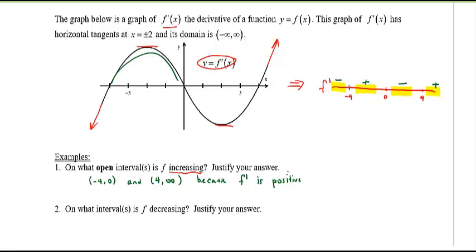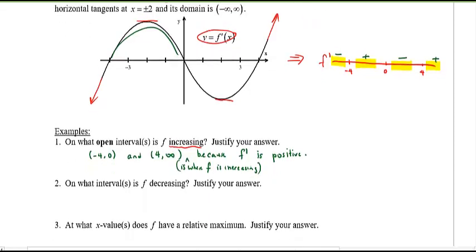Why? What's my reason? Because the first derivative graph, let's say f prime or f prime of x, is positive. You know, if you really want to be more specific, you can say this: negative 4, 0, and 4 comma infinity is where the original function f is increasing because f prime is positive. Now, do you need this necessarily? Not necessarily, but if you want to be more complete, you can do that too.